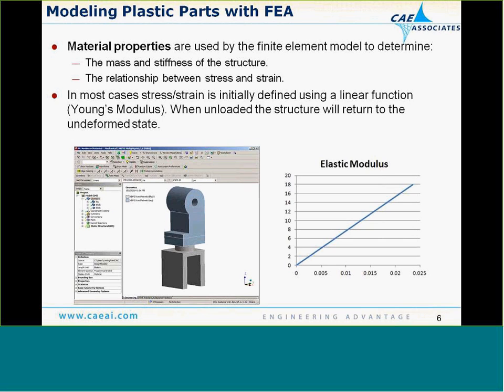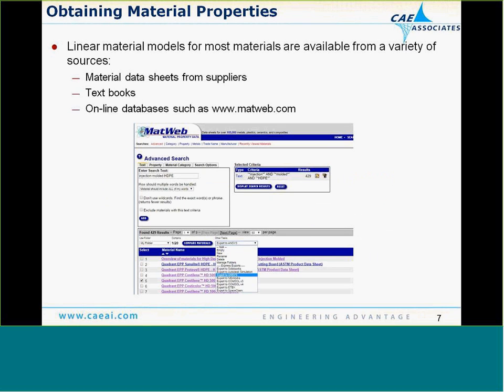Material properties are used by the finite element model to determine the mass and stiffness of the structure, and the relationship between stress and strain. In most cases, the stress-strain relationship is initially defined using a linear function known as Young's modulus. When unloaded, the structure returns to the undeformed state. Linear material models for most materials are available from a variety of sources — from material data sheets from suppliers, from textbooks, or from online databases such as matweb.com.